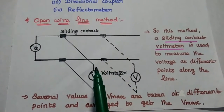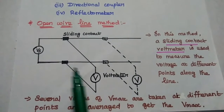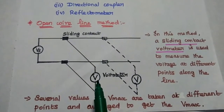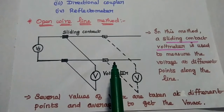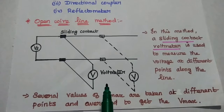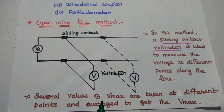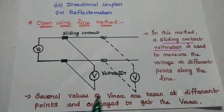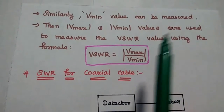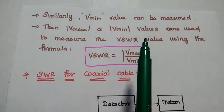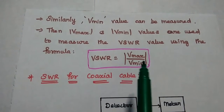In the open wire line method, a sliding contact voltmeter is used to measure the voltage values at different points along the line. The voltmeter is connected with sliding contacts attached to the transmission line. Since it is movable, we can measure several values of maximum voltage at different points and take the average value as the appropriate maximum voltage. Similarly, Vmin can also be measured at different points and that average value taken. Then Vmax and Vmin are used to calculate VSWR using the formula: VSWR = Vmax / Vmin.